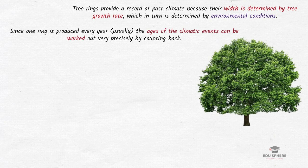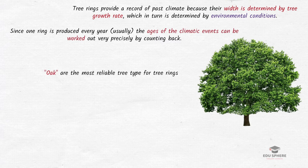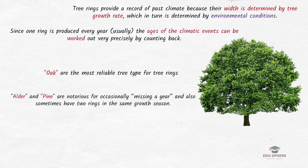We know that tree species vary greatly. In this method, we make the assumption that growth is annual with a distinct growing season. Most tree species are reliable for this method. For example, oak is the most reliable tree type for tree rings with not a single known case of a missing annual growth ring. Alder and pine are notorious species known for occasionally missing a year, and those species also sometimes double up by having two rings in the same growth season.